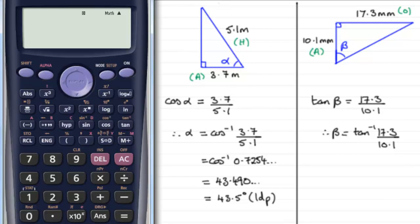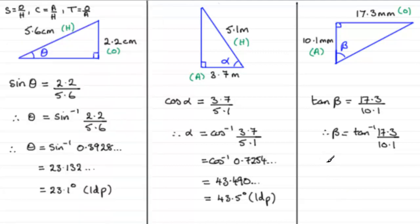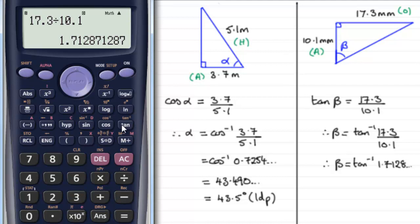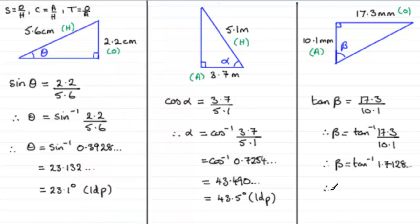And if we just bring the calculator up again and do this calculation, 17.3 divided by 10.1 equals, and if we turn that to a decimal, 1.7128 and so on. So therefore, beta equals the inverse tan of 1.7128 and so on. If we take the inverse tan of that value, shift tan of that answer, what do we get? 59.722 and so on degrees. So therefore, beta equals 59.722 and so on degrees.